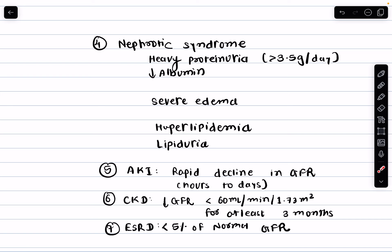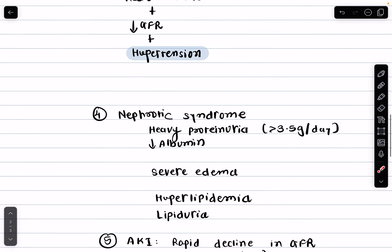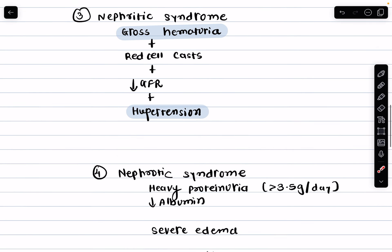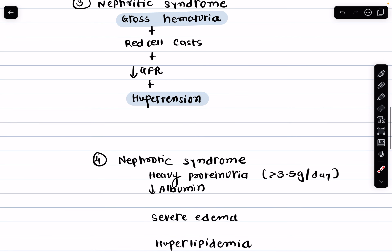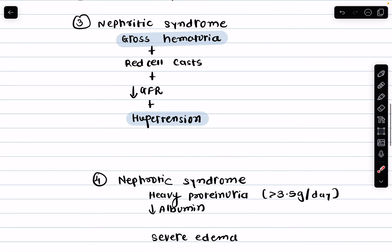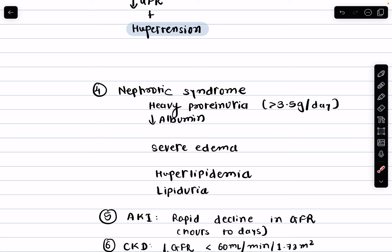Nephrotic syndrome is characterized by heavy proteinuria of more than 3.5 grams per day, low albumin levels in the blood (hypoalbuminemia), severe edema, hyperlipidemia, and lipiduria. The distinguishing points of nephrotic syndrome from nephritic syndrome are the absence of hypertension and gross hematuria — remember heavy proteinuria and lipiduria for nephrotic syndrome.